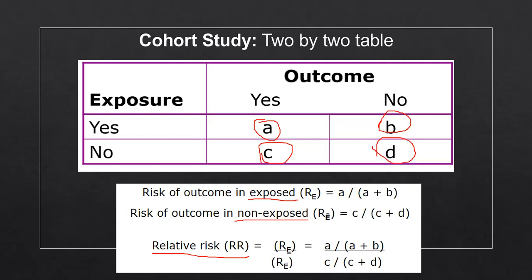So once we come up with these two numbers, we can then come up with the relative risk by essentially dividing the risk of outcome in exposed to the risk of outcome in the non-exposed. And you essentially just get the numbers and then you divide them up and you'll get the relative risk.